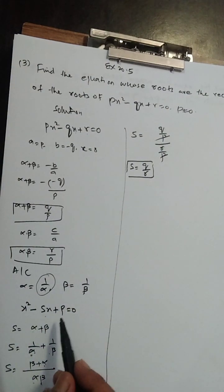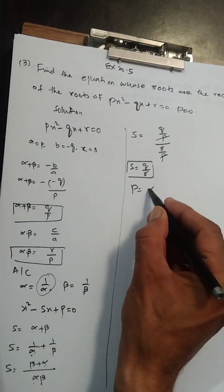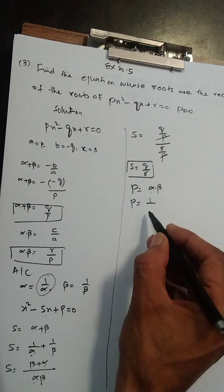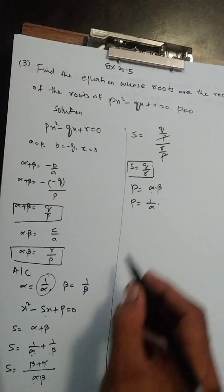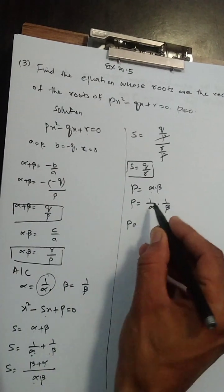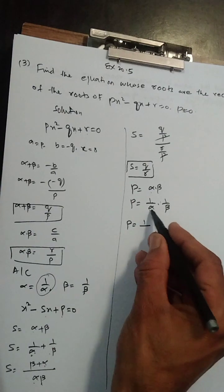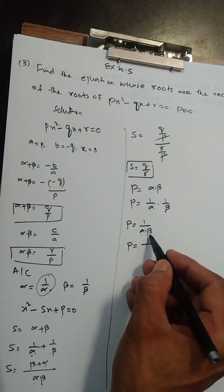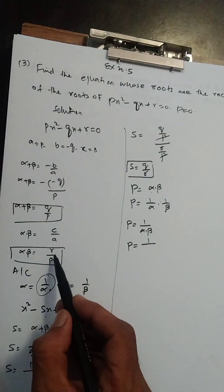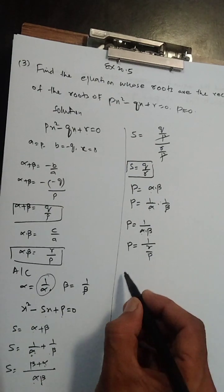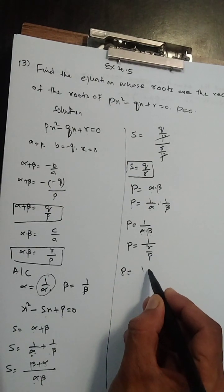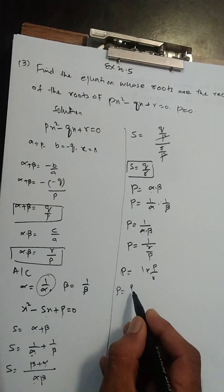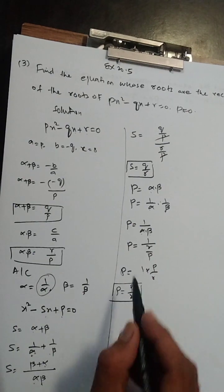Uske baad equation banane ke liye product bhi chahiye. Product ka formula hai alpha* × beta* = (1/alpha) × (1/beta). 1 ko 1 se multiply karein = 1, alpha ko beta se multiply karein = alpha×beta. So product = 1/(alpha×beta). Alpha×beta ki jagah r/p rakhenge, reciprocal karenge to p upon r milega.